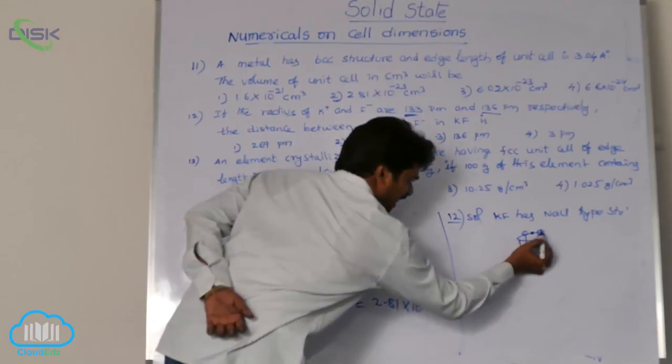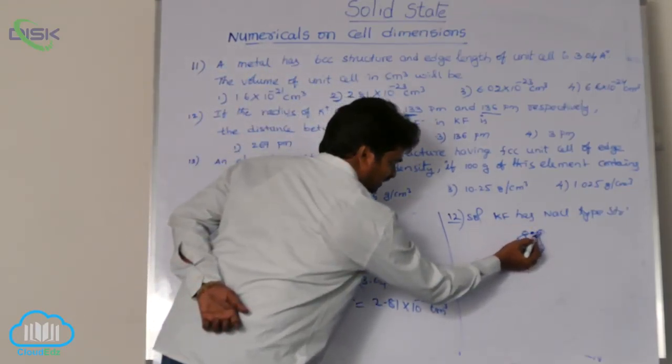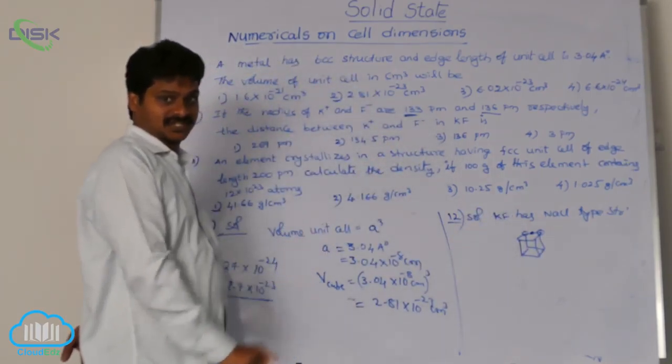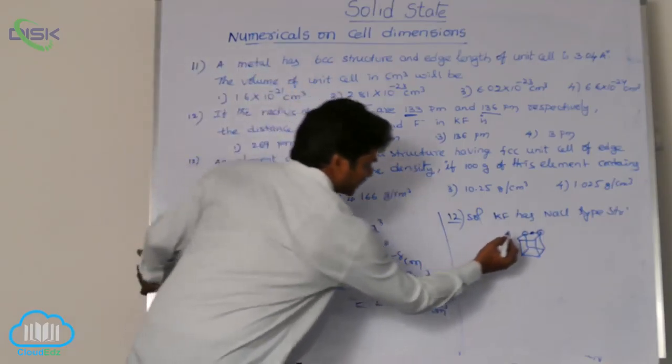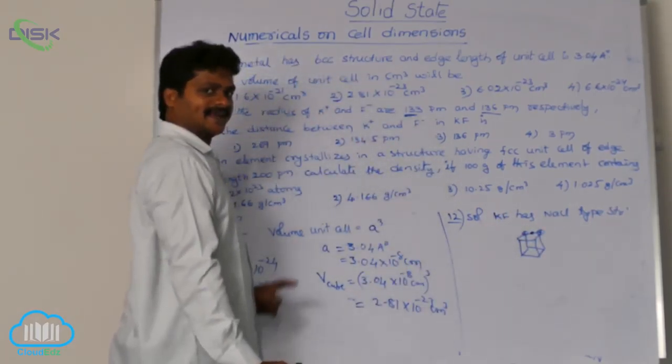Now, these three are in touch with each other. At corners, fluoride ions and at the edge center, potassium ion. They are in touch with each other. But, this distance from this center to this center gives what? Edge length A.